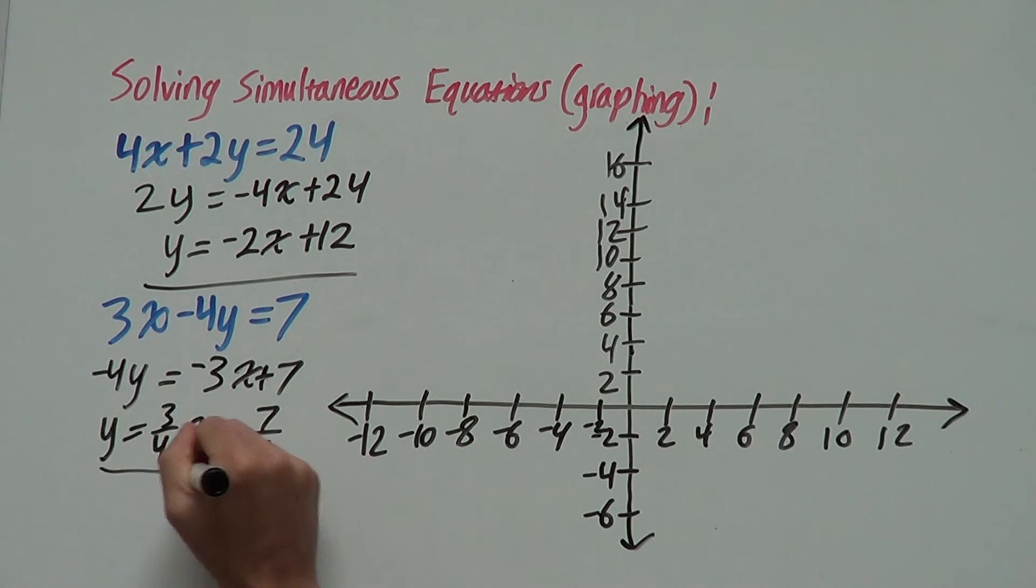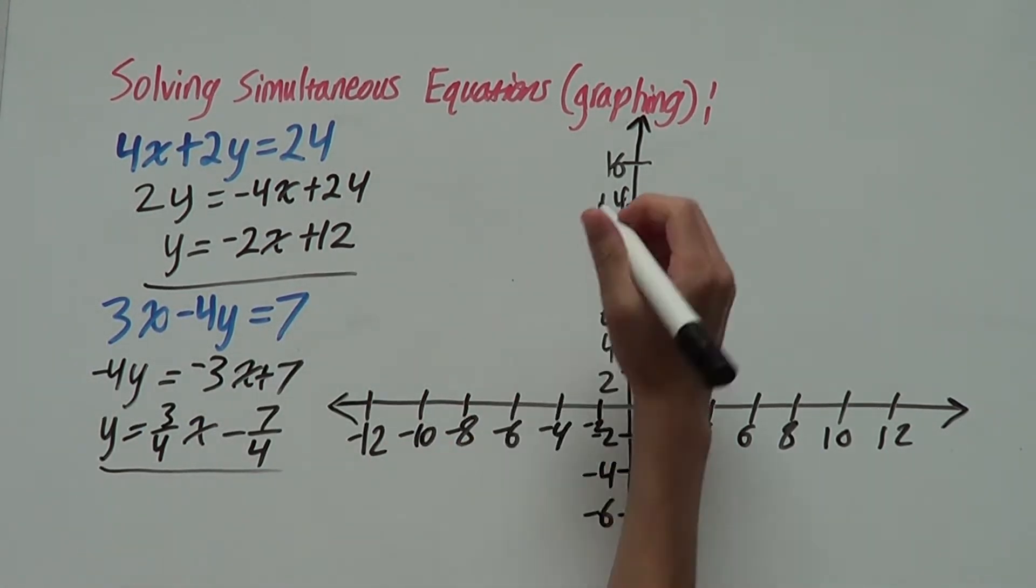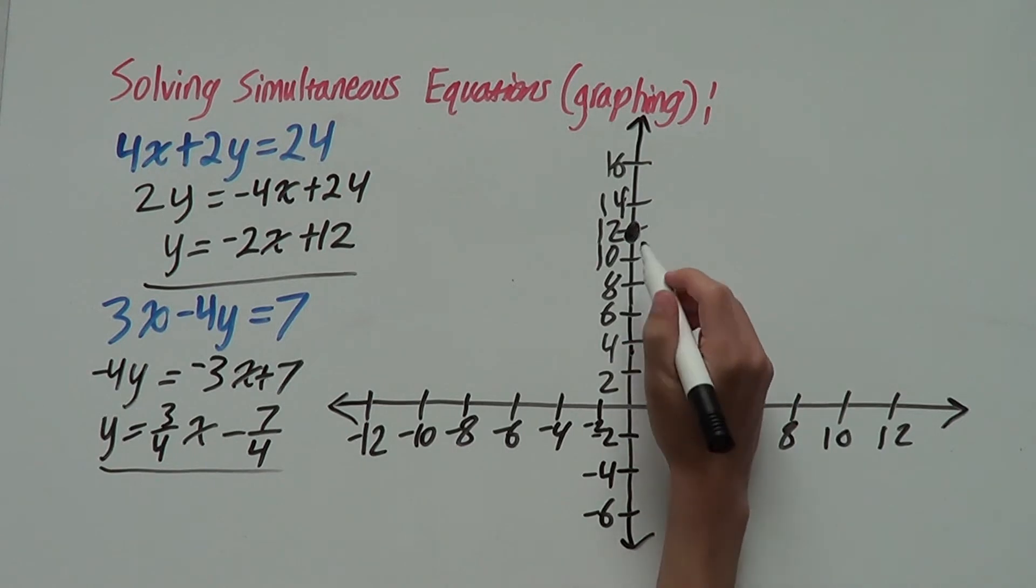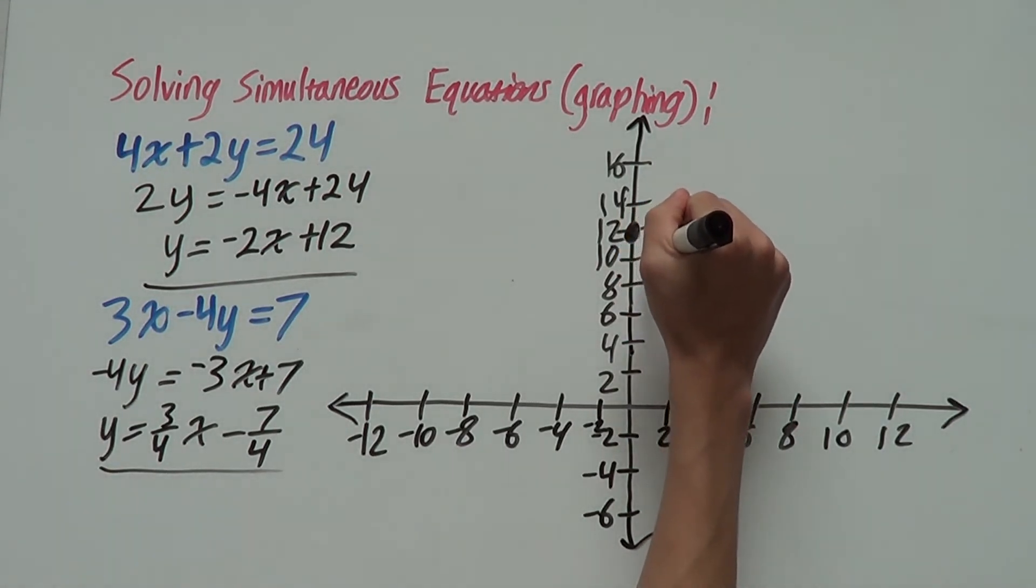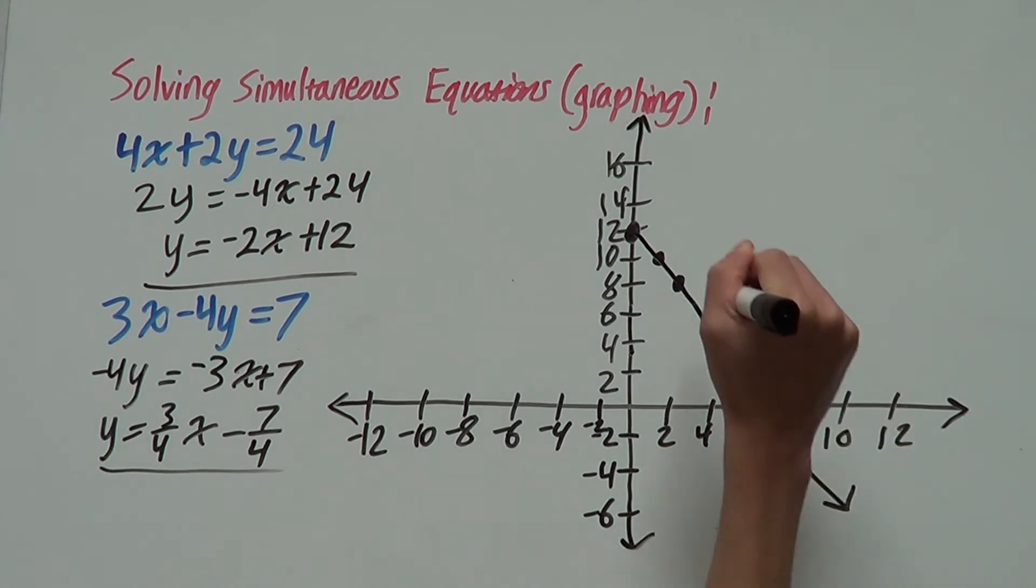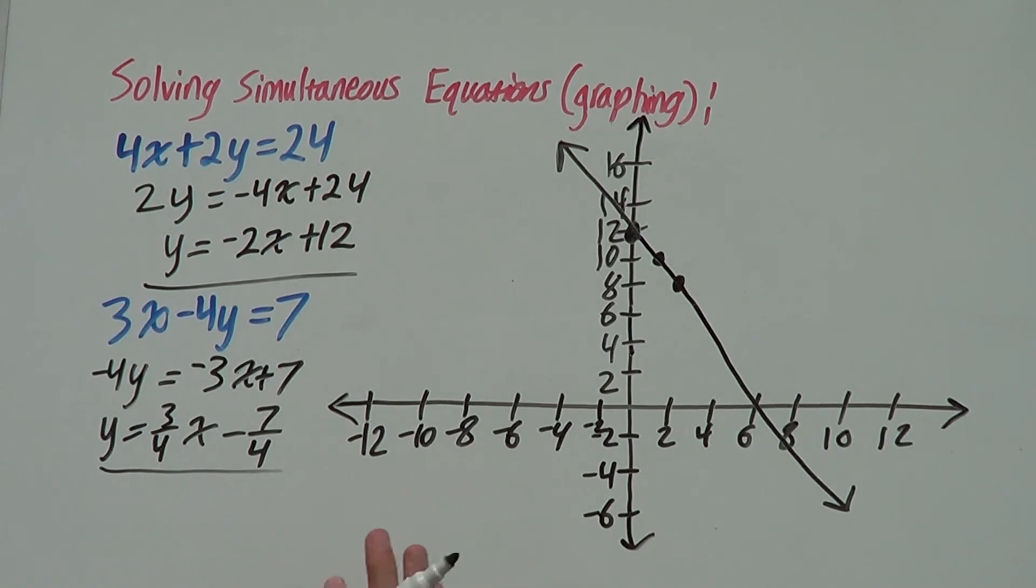So, now both of these are ready to graph. For this first one, let's graph this. We look at our y-intercept which is 12 and our slope or gradient is negative 2. So, down 2 across 1, down 2 across 1. So, a line will look something like this. This is not graph accurate because we're not using graph paper but it will be good.